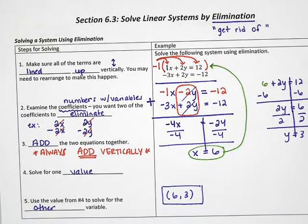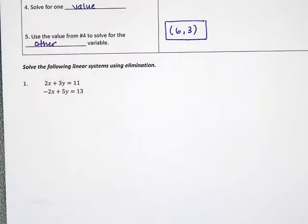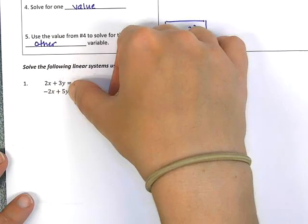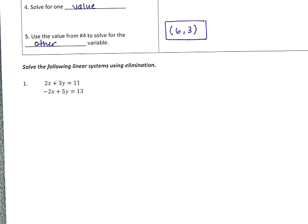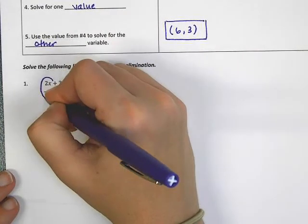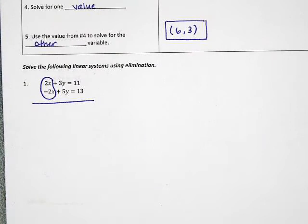Let's try a couple of examples and practice getting rid of one of the variables in order to solve the problem. Problem number 1: first, is everything lined up? The x is on top of the x, the y is on top of the y, the number is on top of the number, the equal sign is on top of the equal sign — we're good. Now look at the numbers. Right away I notice that the 2x and the negative 2x will cancel each other out, so I don't need to multiply by anything in this problem to make that happen. They're already good to go.